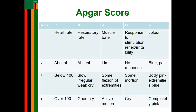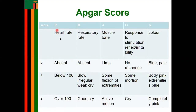The first thing to check is the pulse in terms of heart rate. If the heart rate is absent, you give a score of zero. If the heart rate is below 100, you give a score of one. If the heart rate is above 100, you give a score of two, which is the perfect score.